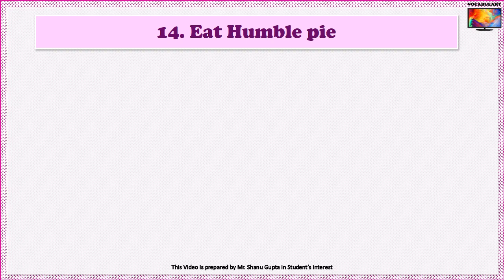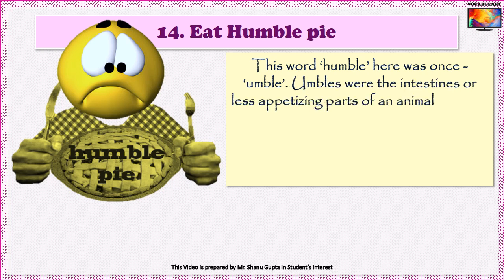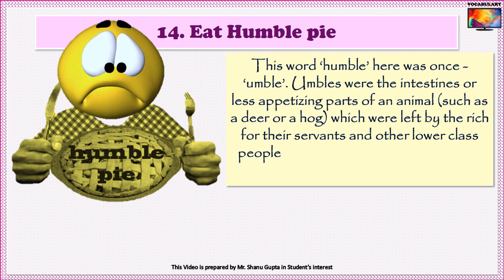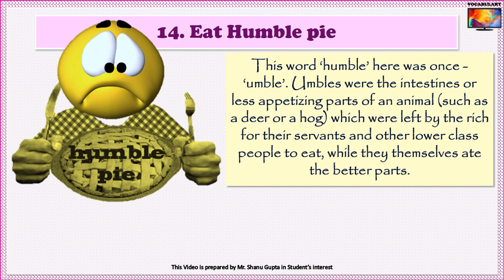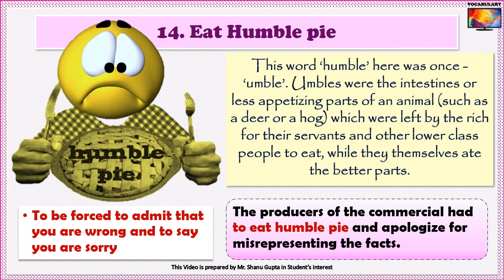Our fourteenth idiom is to eat humble pie. This idiom has a very interesting origin. The word 'humble' here was once 'umble.' Umbles were the intestines or less appetizing parts of an animal, such as a deer or a hog, which were left by the rich for their servants and lower class people to eat, while they themselves ate the better parts of the meat. In time it became corrupted to 'eat humble pie' and came to mean to debase yourself or act with humility — being forced to admit you are wrong and say you are sorry. Example: The producers of the commercial had to eat humble pie and apologize for misrepresenting the facts.